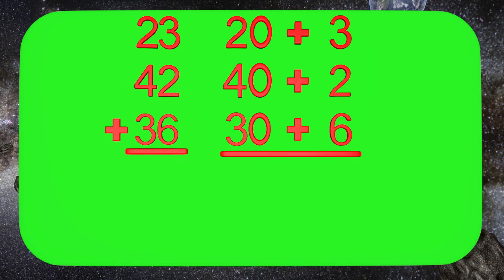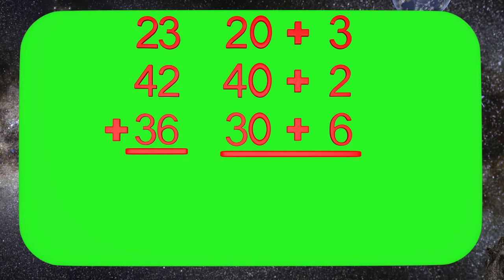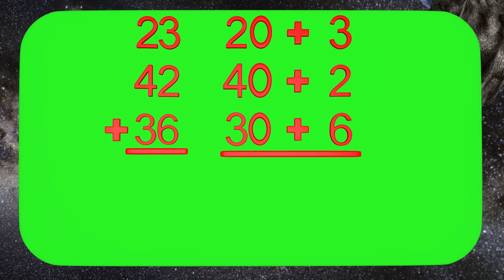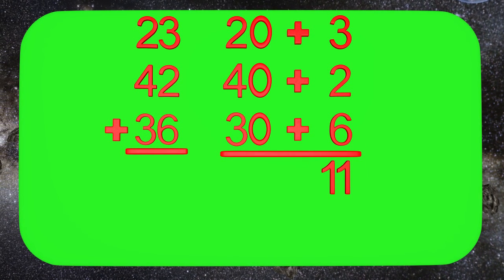Let's start by adding the ones. 3 plus 2 is 5, and 5 plus 6 is 11. We will write the 11 here. Remember, these are still in the ones column, so let's bring down the plus sign.